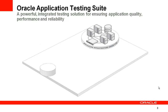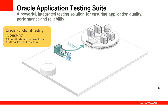Application Testing Suite consists of three separate but integrated products. The first product is Oracle Functional Testing, which we usually call OpenScript. OpenScript provides automated functional and regression testing for web-based applications. This is also where you create your load testing scripts, so it is both a functional testing tool and a load testing script generator.